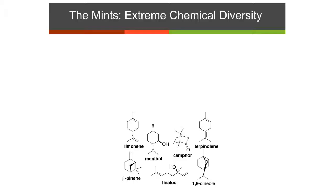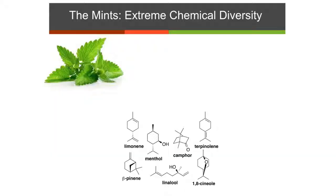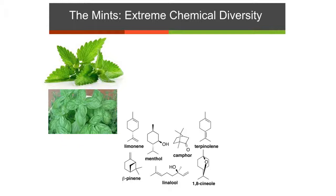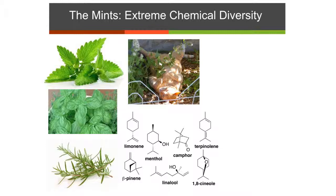The next project is on the mints. The mints produce all kinds of really neat chemicals that we probably will eat today — you may have even used them this morning in the shower. A lot of plants are in the mint family: obviously spearmint and peppermint, which is worth $200 million a year as an agronomic crop in the United States. From toothpaste to gum to flavorings, harvesting mint oil is a pretty important agronomic crop. We also have basil, rosemary, catnip — we're going to get a publication and be on the cover of Cat Fancy. And surprisingly, teak is in the mint family as well.